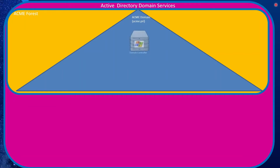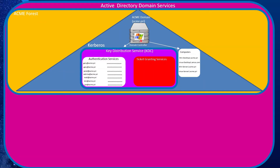As was discussed in the previous episode, Active Directory Domain Services, or AD for short, is a hierarchical system by nature. Forests are the outermost container, and within each forest there will be one or more domains. Domains are represented by domain controllers, which are basically Windows servers — the workhorse of the entire AD system. Many components, services, and databases are hosted on a domain controller.